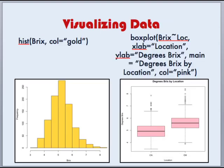Let's take a look at our BRICS dataset. We can do this first using a histogram — the command hist in R — and we can look at our frequency distribution, which doesn't look too bad. Just for fun, I've decided to color the bars gold, using the command col equals 'gold' in quotation marks.